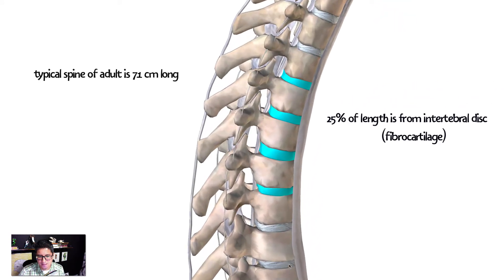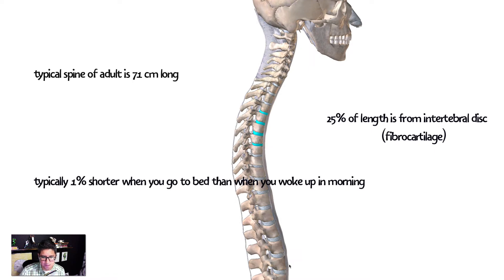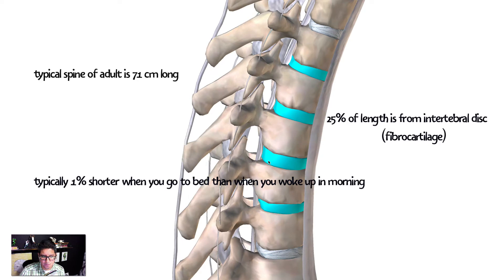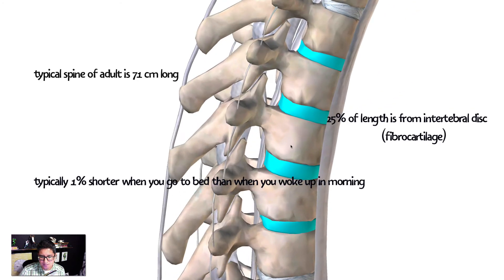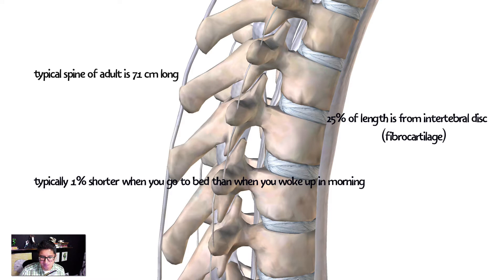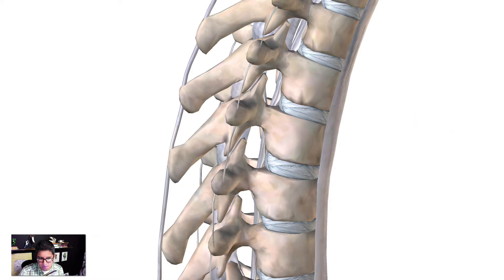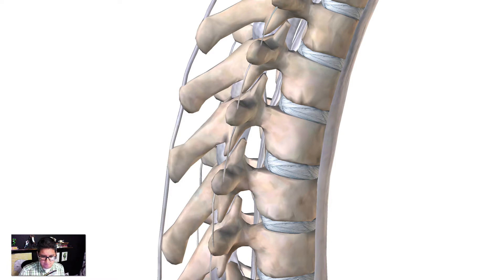Something you may not have realized is that on a day-to-day basis you actually lose about 1% of your total height. When you go to bed, you're about 1% shorter than when you woke up. As you go about your day, the cartilage in the intervertebral discs has a lot of water in it. As it acts as a shock absorber, that water gets compressed out, the discs become thinner, and you end up being shorter. This is even more dramatic after a marathon run — you can lose a couple of inches. But when you sleep, you decompress, the water gets reabsorbed into the fibrocartilage, and you regain your height.